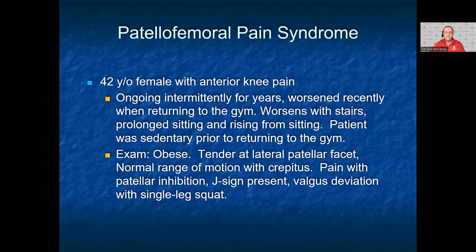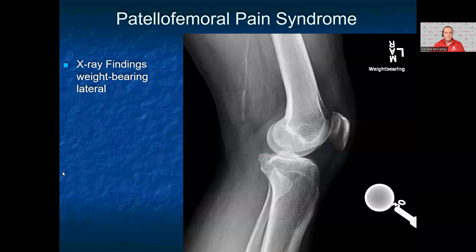The next case is a 42-year-old female presenting with anterior knee pain that has been going on intermittently for a year, worse recently when returning to the gym. It is worse with stairs, prolonged sitting, and rising from sitting. Prior to returning to the gym, she was sedentary. She is an obese female. She has tenderness to palpation of her lateral patellar facet, normal range of motion with crepitus, positive patellar inhibition, a positive J sign, and a valgus deviation with a single-leg squat.